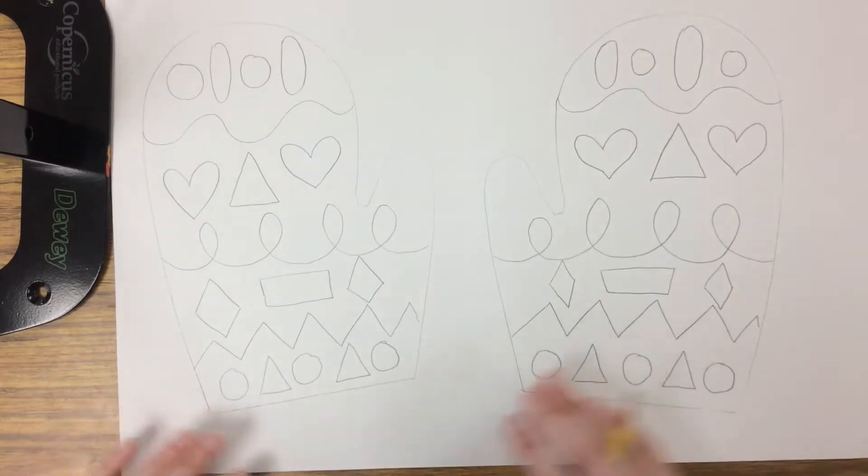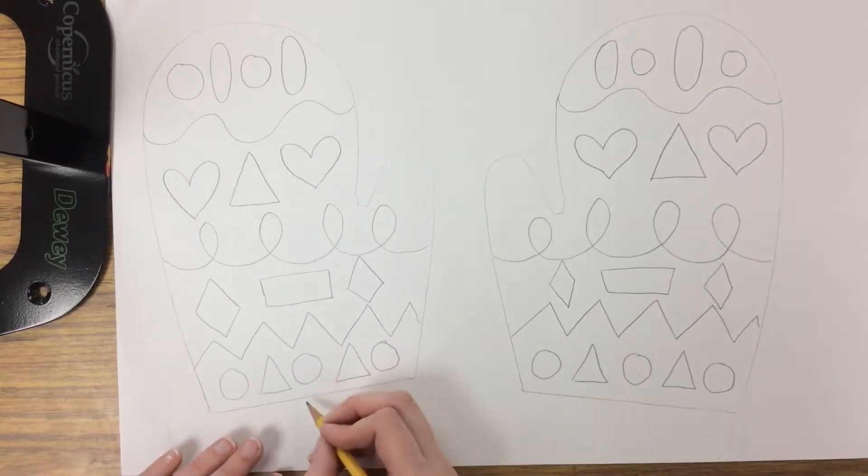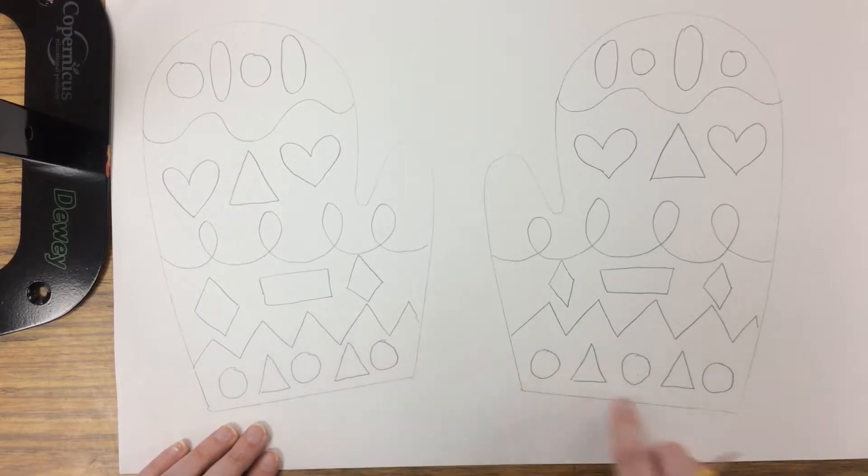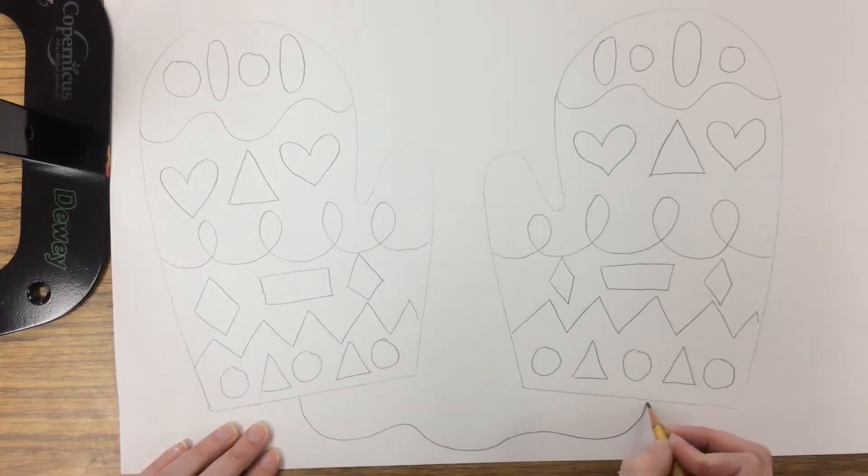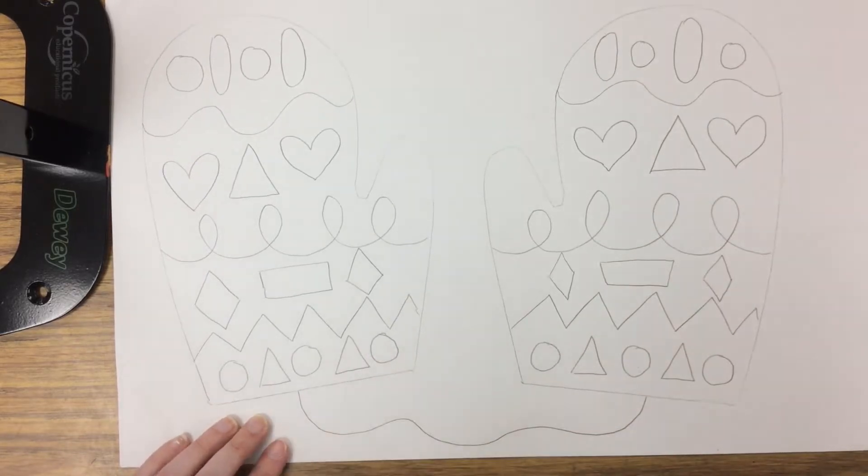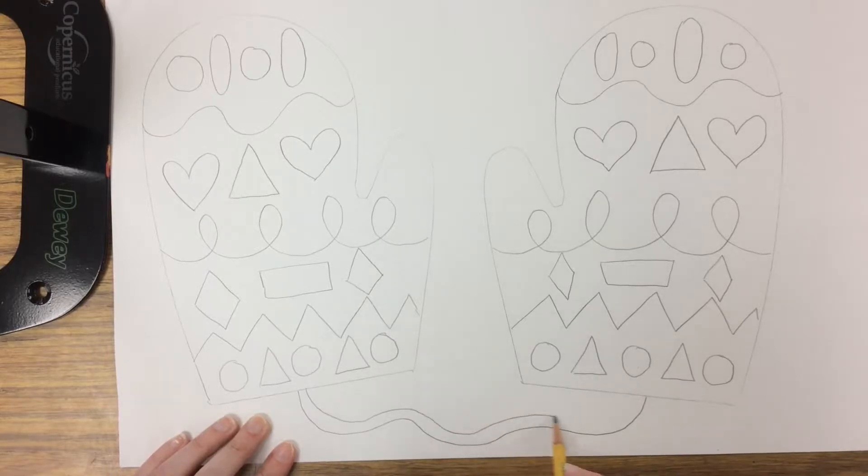After I have my patterns drawn in, I'm going to draw wavy line from the bottom of my left mitten to the bottom of my right mitten. And I'm going to then follow it with a second line. And this can be the string that will hold our mittens together.